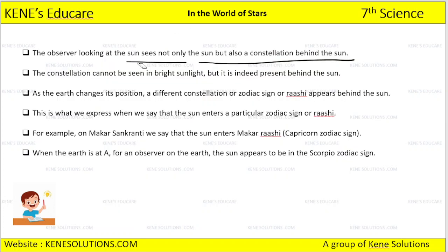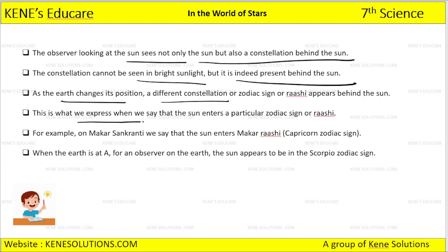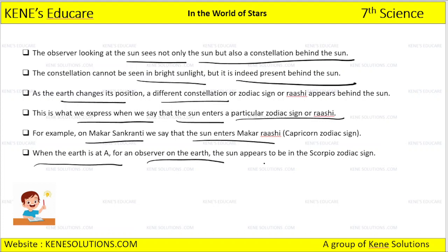As the earth changes its position, different constellations and zodiac signs appear behind the sun. This is what we express when we say the sun enters a particular zodiac sign — like Makar Sankranti, when we say the sun enters Makar Rashi. When the earth is at position A, for an observer on the earth, the sun appears to be in the Scorpio zodiac sign. In this way, the relation between earth's position and zodiac signs has been established.